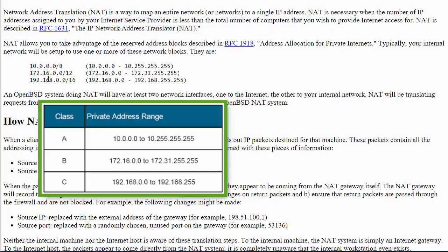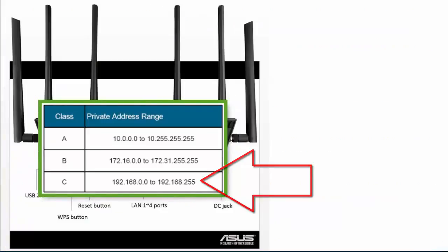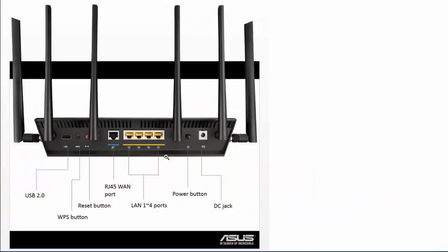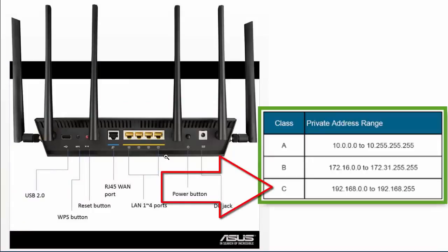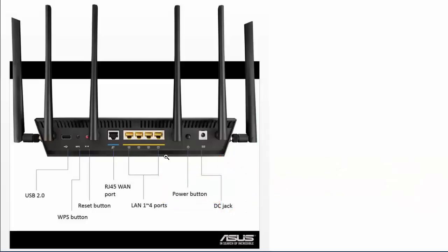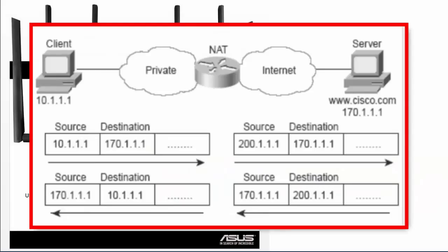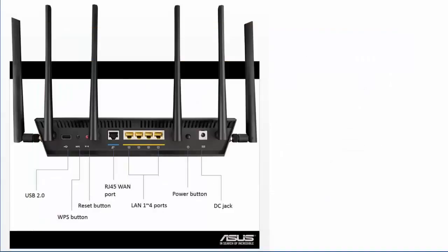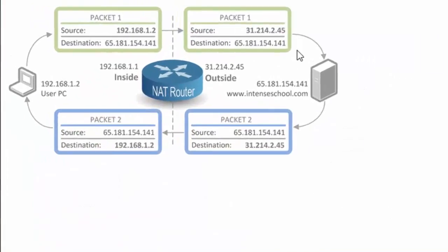192.168 is the predominant choice for small home routers. Most of us at home are going to be using a 192.168 IP address scheme. That's a private IP address scheme and we're going to use NAT to translate that to a public IP address. So let's get started looking at NAT.